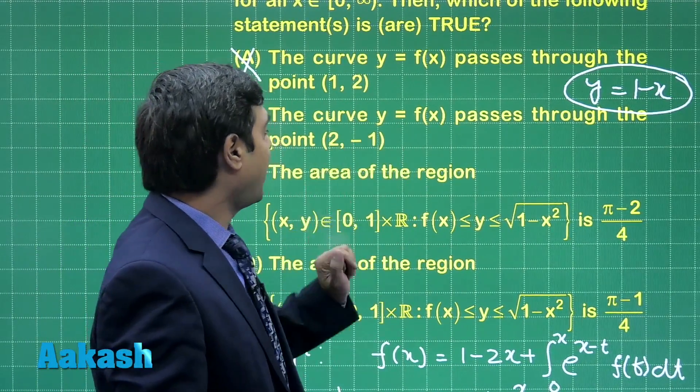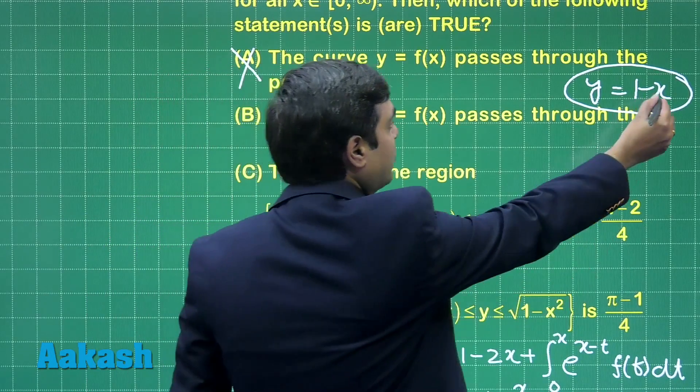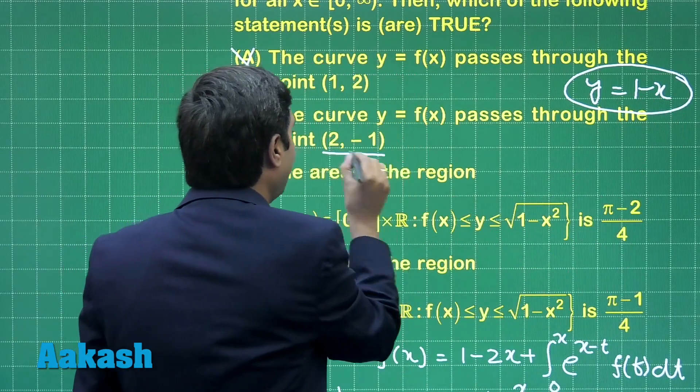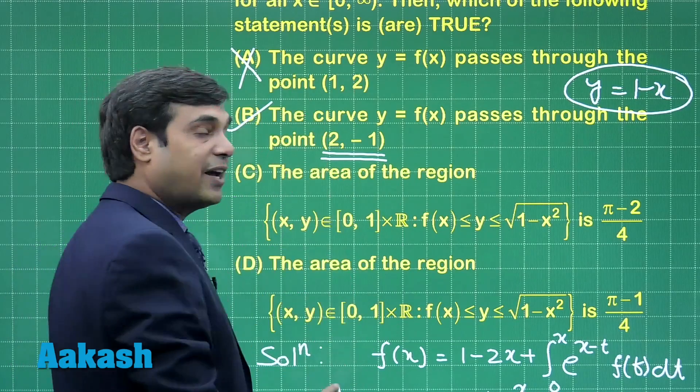It passes through (2, -1): yes, when we put x equals 2, we get y as minus 1. This option is correct.